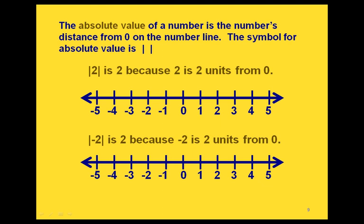Now let's talk about absolute value. The absolute value of a number is the number's distance from zero on the number line — the number of units that the number is from zero. The symbol for absolute value is two vertical lines on either side of the number. So here we have the absolute value of 2. If we graph 2 on the number line and look at how far it is from zero, that's two units.